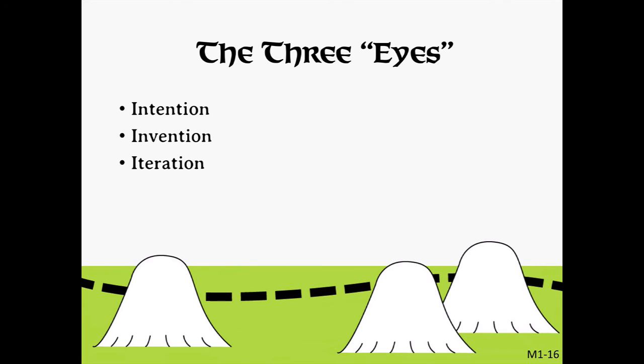Clearly, there is a lot of ground to cover when it comes to understanding level design. So how do we approach such a complex topic? By starting with three fundamental categories that define our approach to design in general. The three I's of design are intention, invention, and iteration. Our next module will introduce the major topic of intention and show why designers need to clarify the intentions behind their designs.